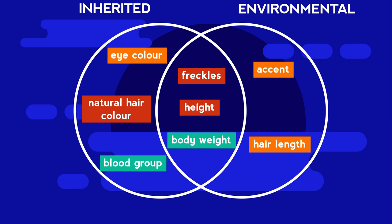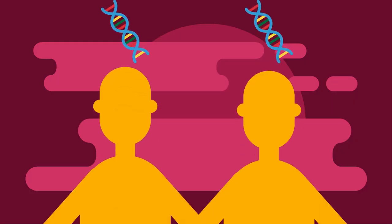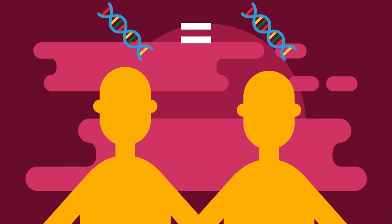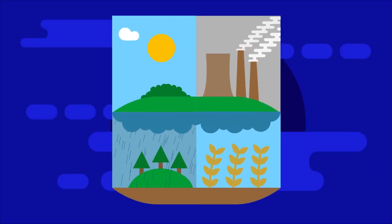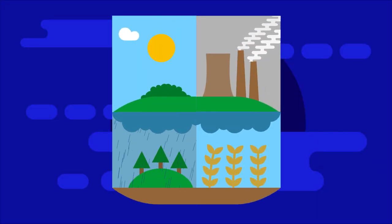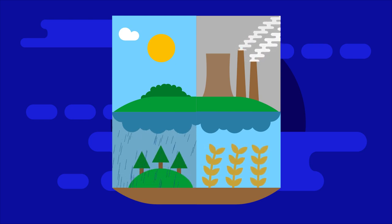The effect of genetics and the environment on characteristics has been researched using identical twins. Can you think why this is? Identical twins have identical DNA, so in theory should have identical characteristics. It follows that any differences between a pair of identical twins could be due to the influence of the environment on their characteristics.